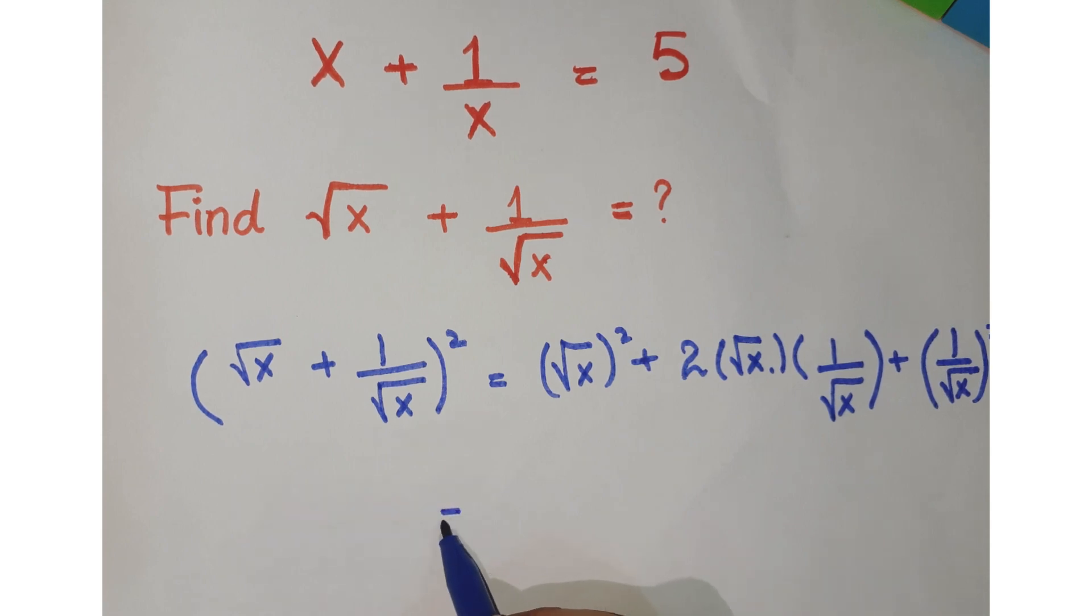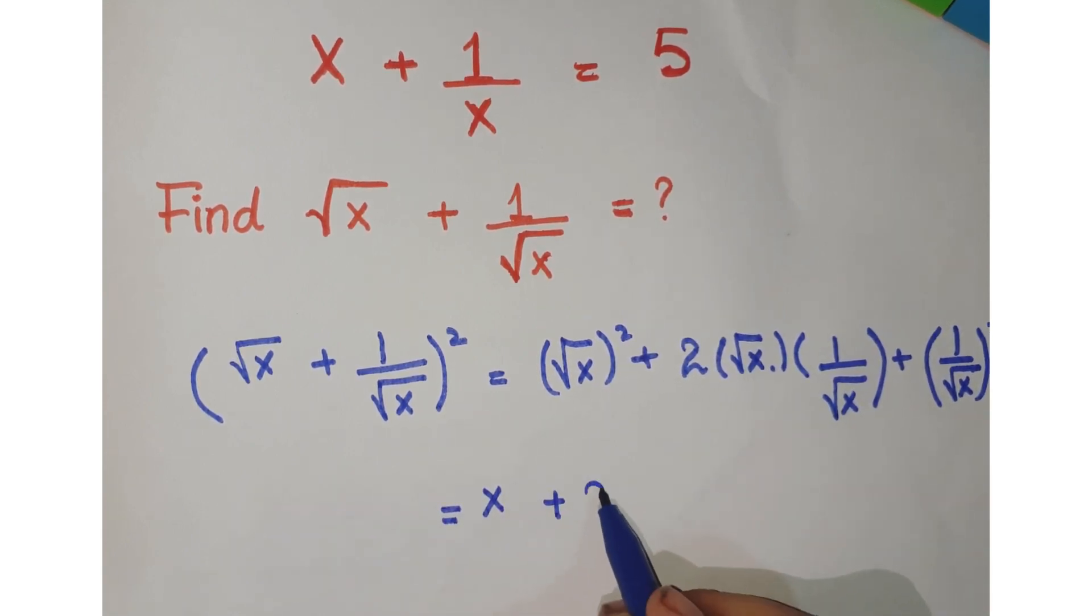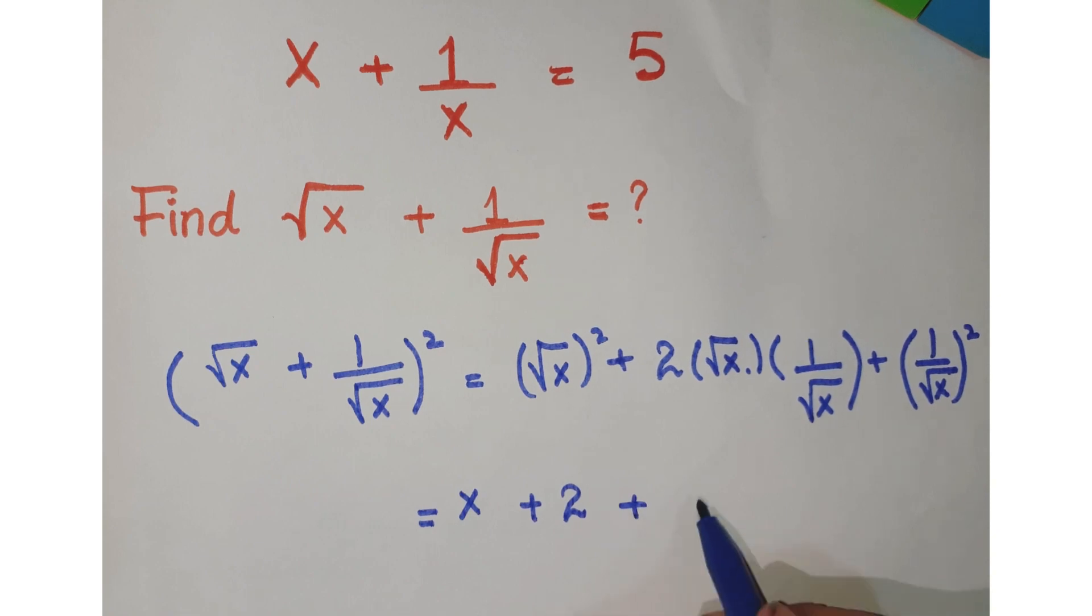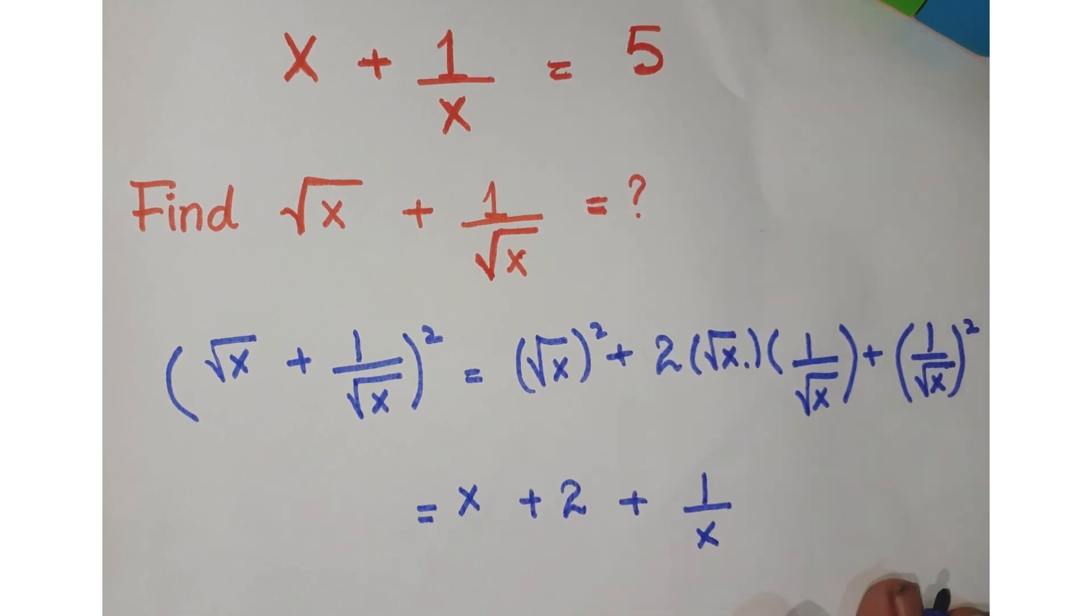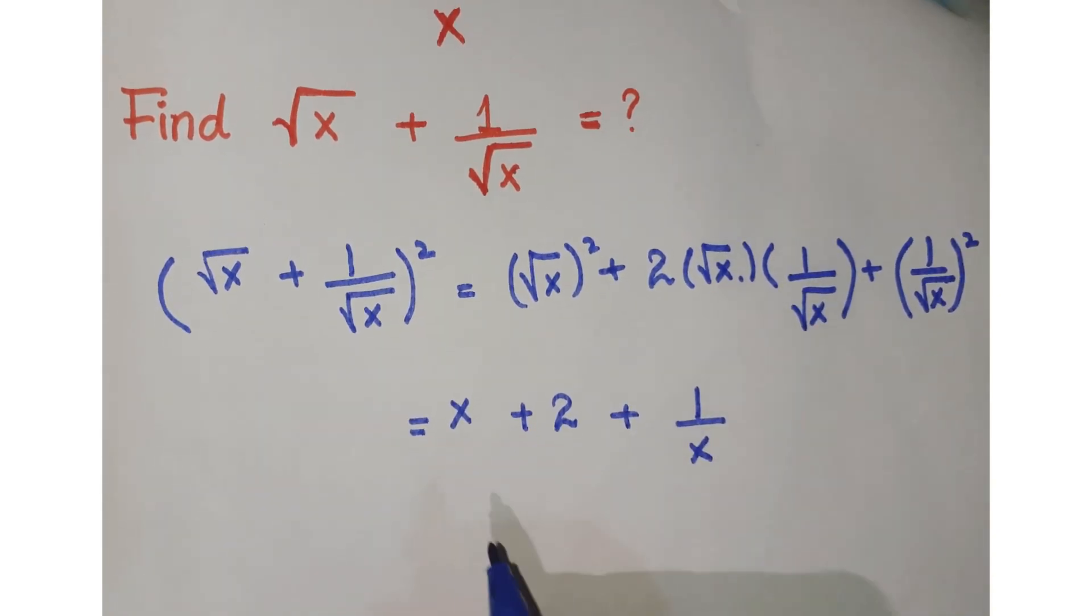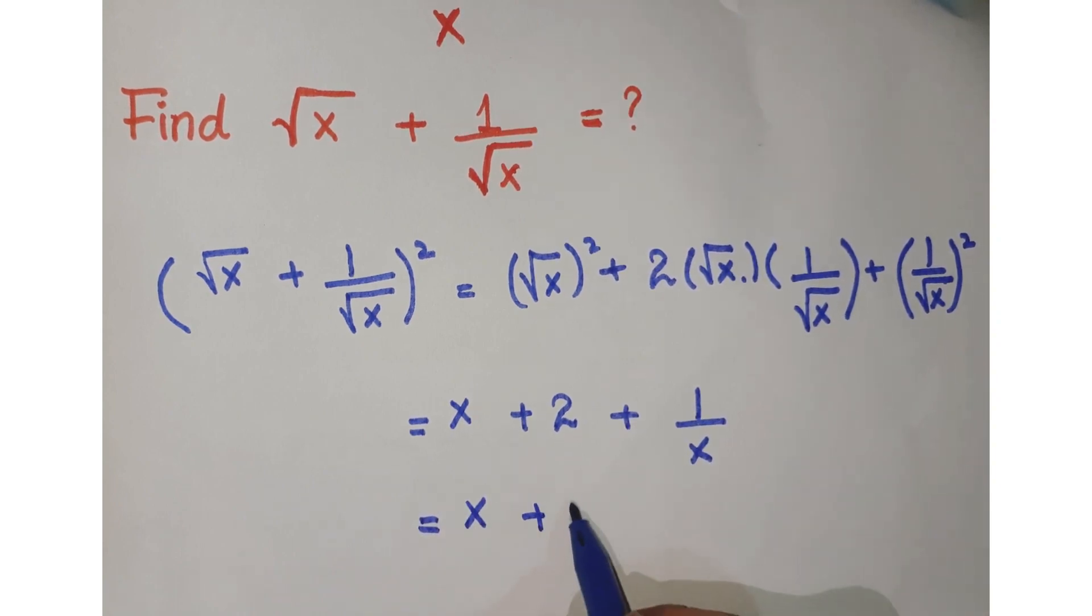So what you will get, you will get here x plus 2 plus 1 over x. So you can rearrange it like this: x plus 1 over x plus 2.